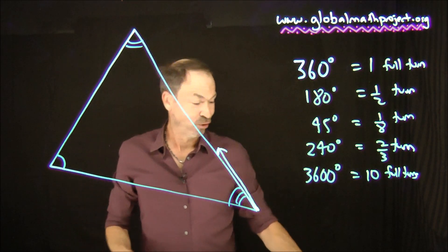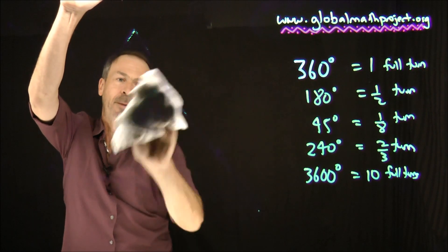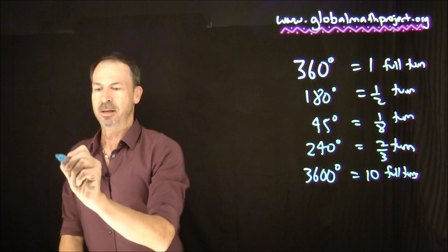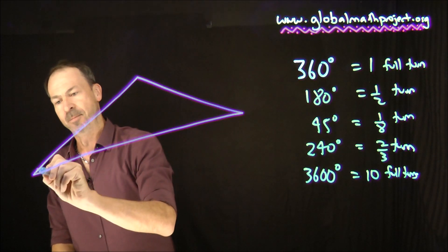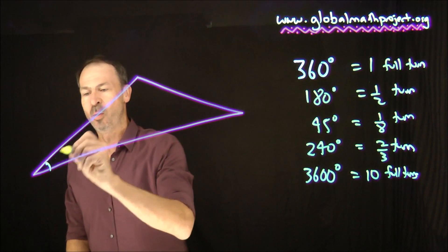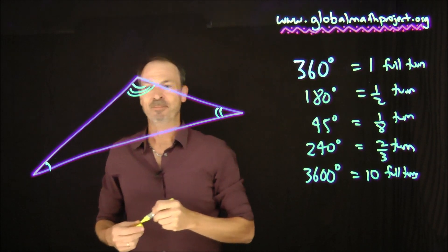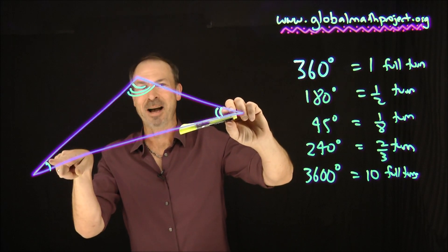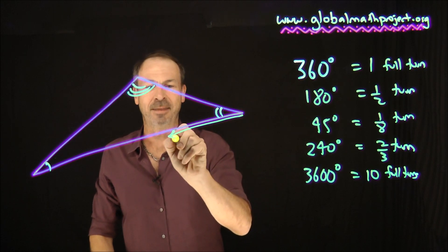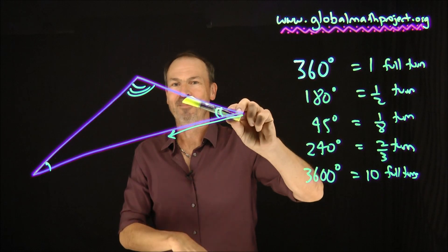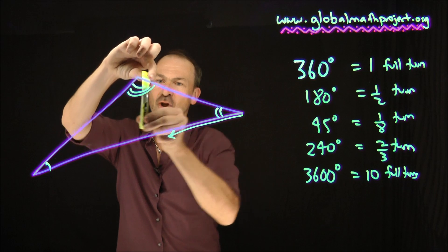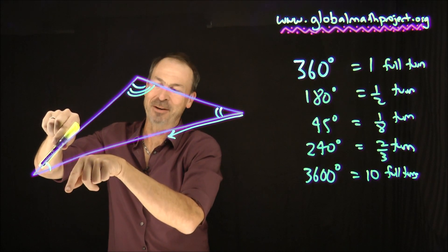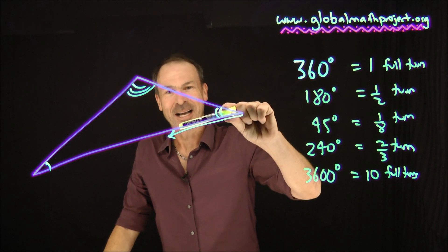Let me do it again for another triangle — a skinny, fat triangle this time. There are three angles: one, two, three. Applying each amount of turning: first, zoom; slide, not changing direction; second amount of turning, zoom; slide; third amount of turning, zoom. And again, that marker underwent half a turn.